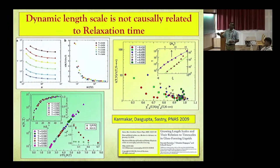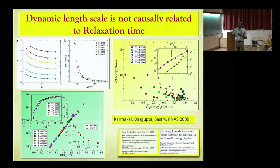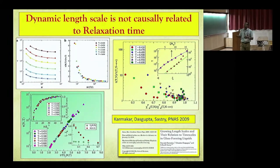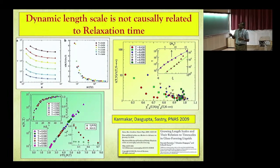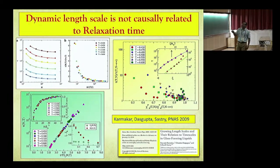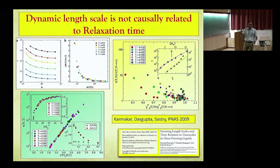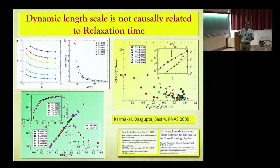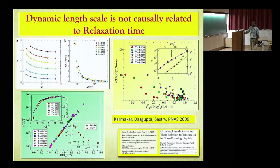There is a strong decoupling between static and dynamic length scales, particularly in these kinds of systems. For those computing the softness parameter, this would be an interesting check — whether the softness itself can predict the system-size dependence, because in system-size dependence you only change the size, not anything else. It is very clear that for all glass-forming liquids you take, you have a system-size dependence that can only be explained by introducing a static correlation length. We wrote a review article on this.